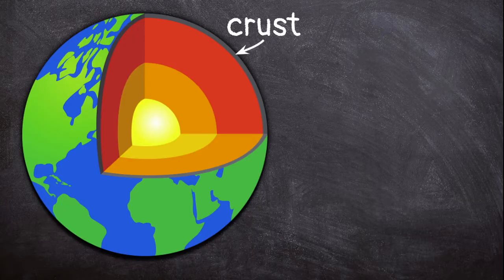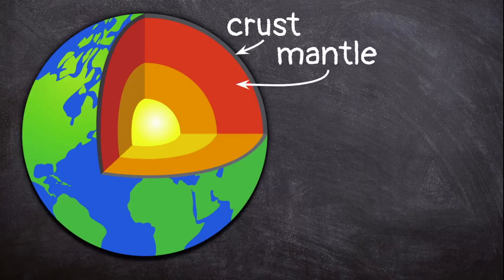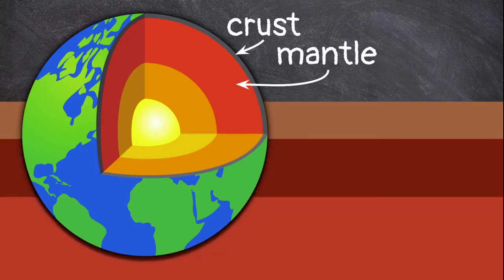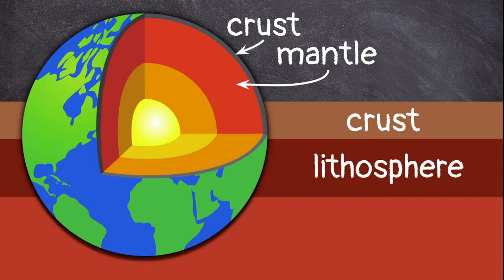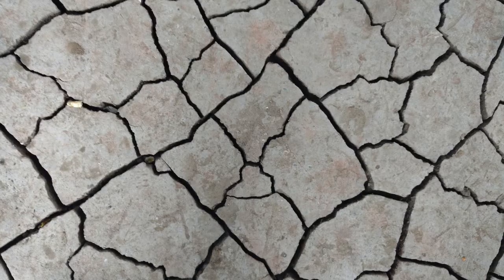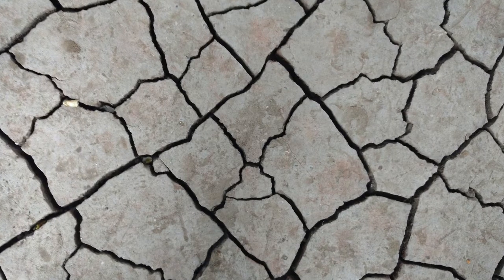Beneath the crust is a layer called the mantle. The mantle has its own layers. The top layer of the mantle is called the lithosphere. This layer is more important than you may know — so important, it is literally earth shattering.